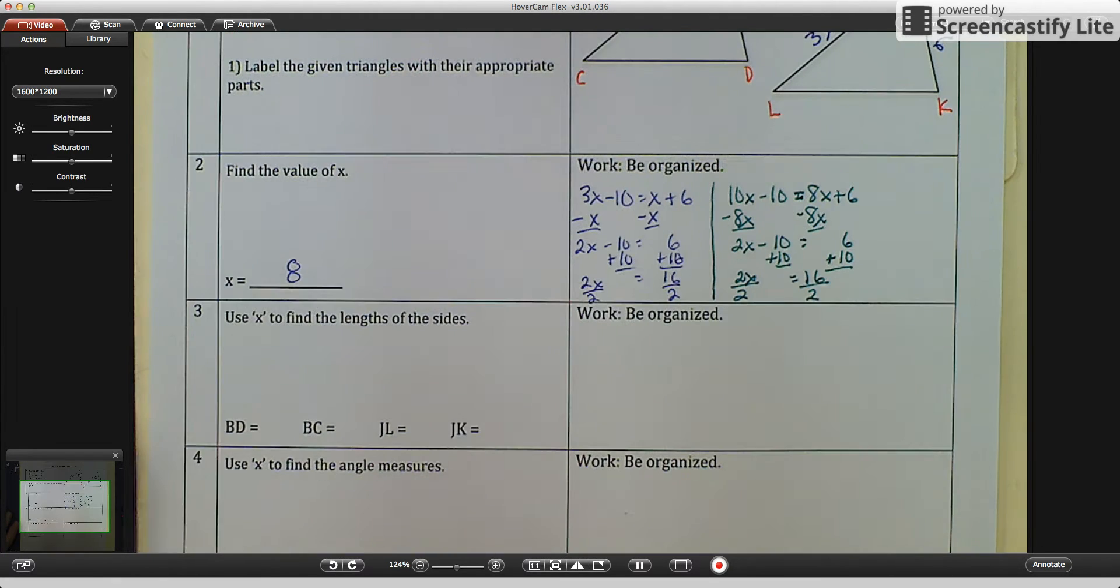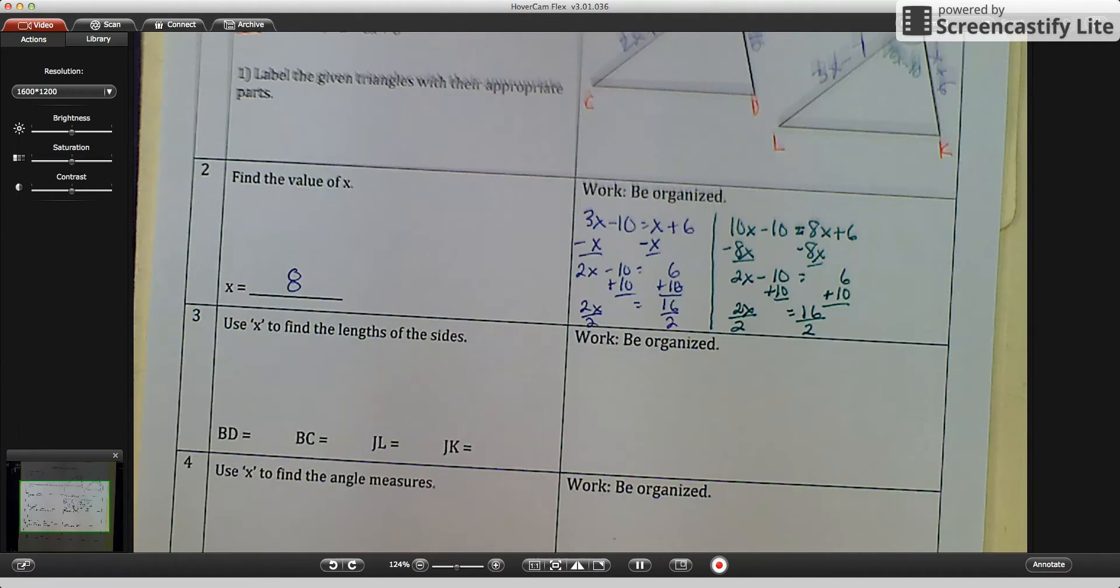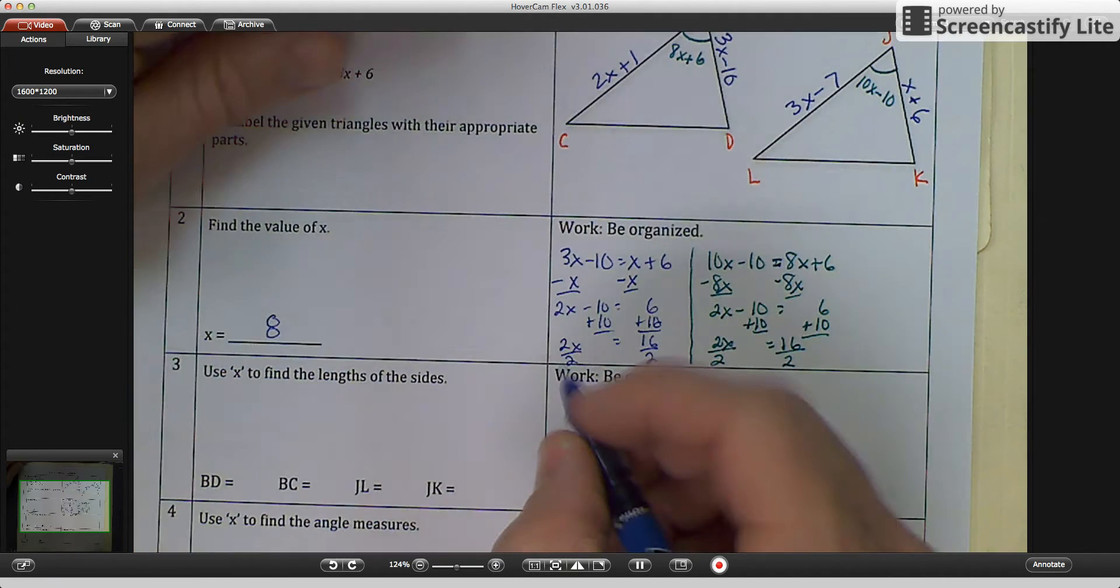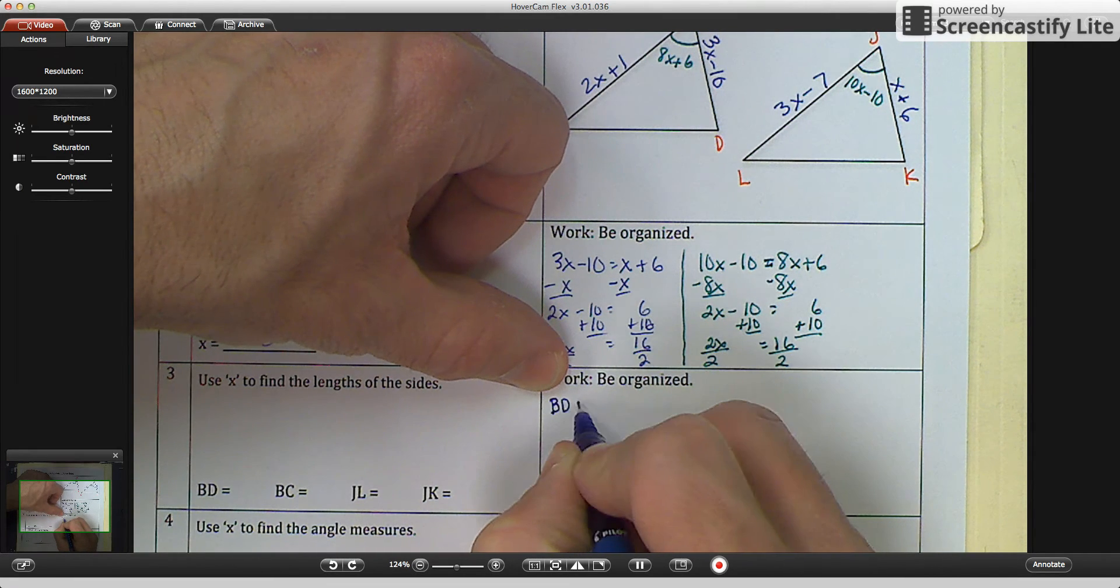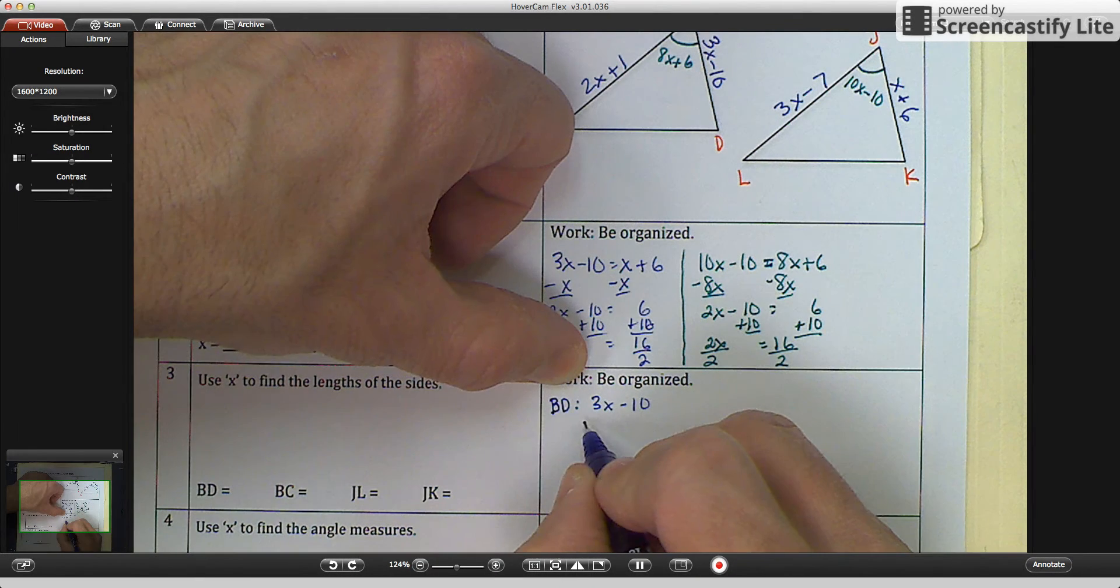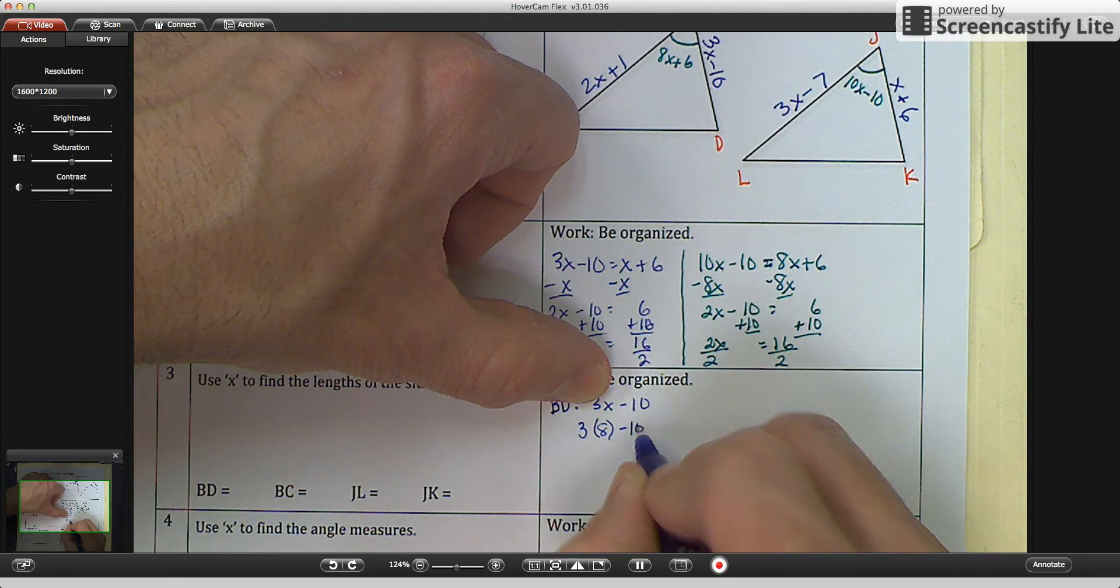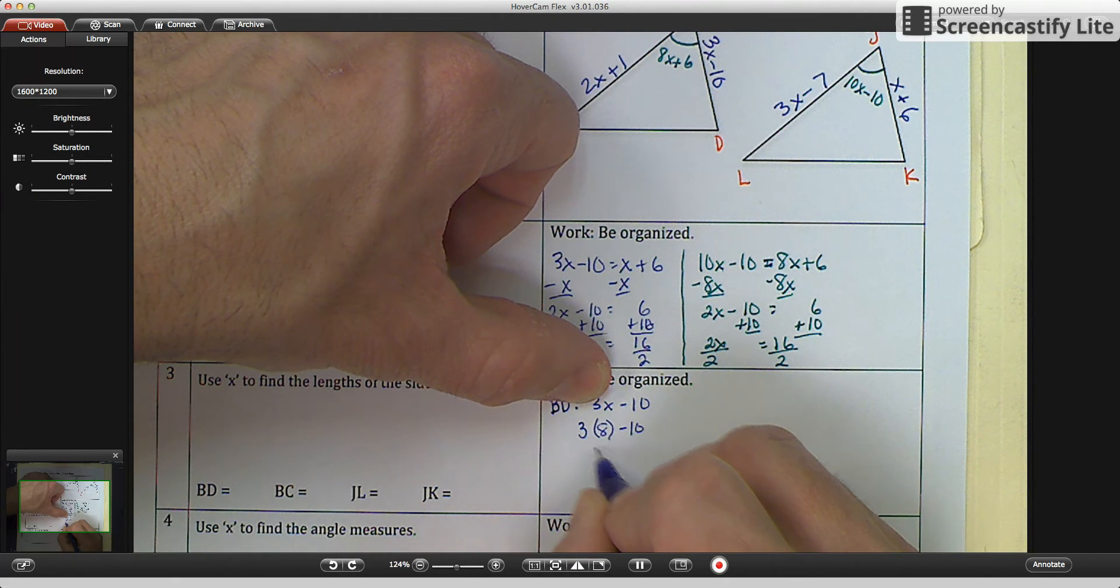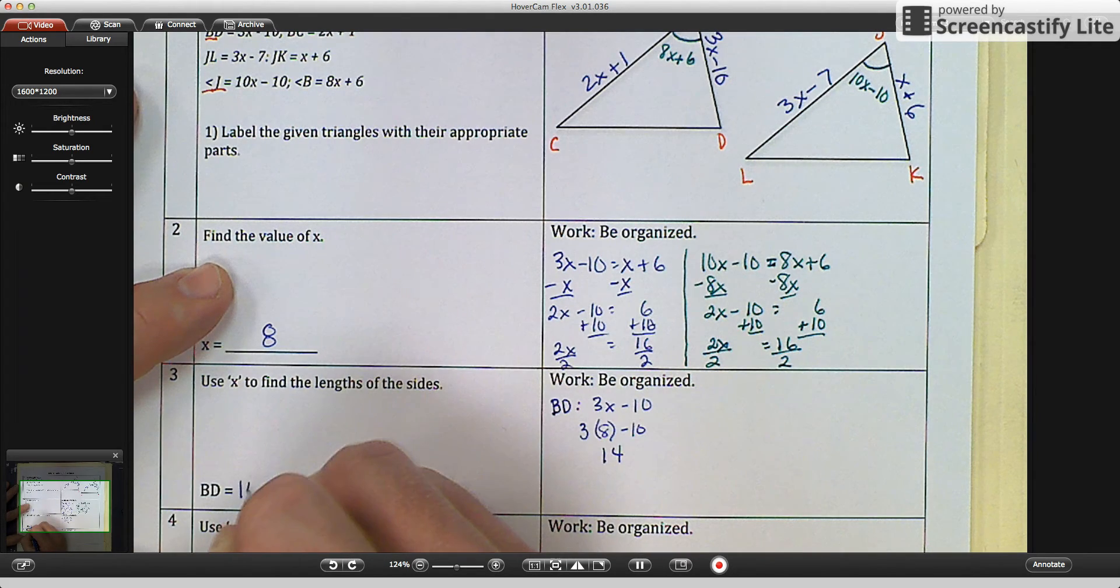Now we're going to move to question number 3. And it says, use X to find the lengths of the sides. So we know that X equals 8. So BD. And I'm going to say, show my work and be organized. So I'm going to write BD is equal to 3X minus 10. So I'm going to substitute my 8 in there. 3 times 8 is 24. Minus 10 is 14. So BD is 14.